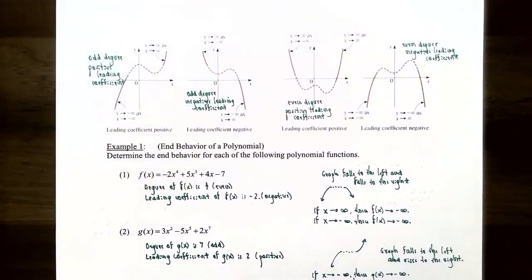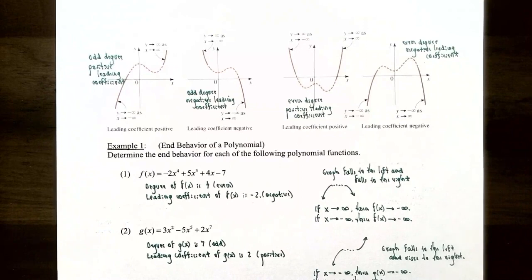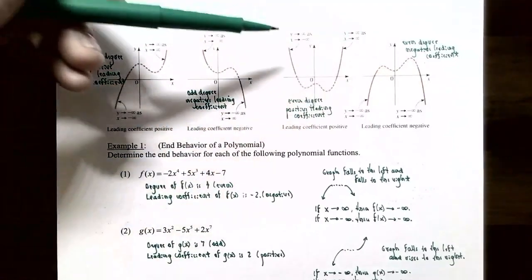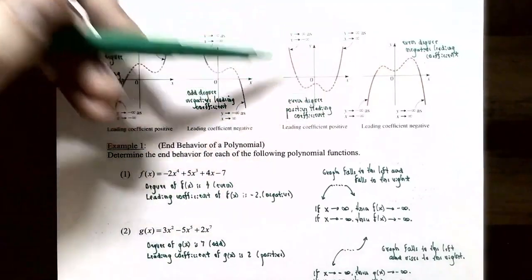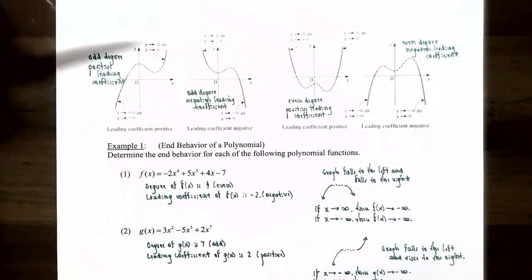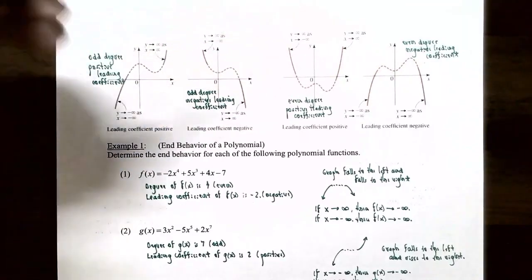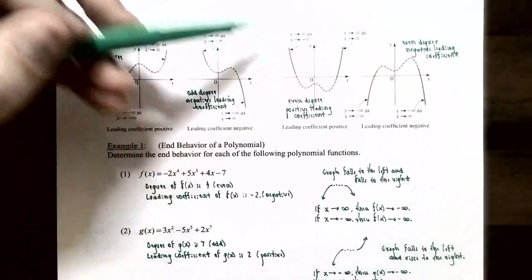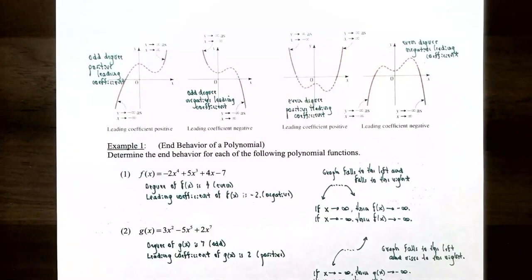Case 3: even degree with a positive leading coefficient. The graph rises on both the far left and the far right. As x approaches negative infinity, y approaches positive infinity, and as x approaches positive infinity, y also approaches positive infinity. For even degree polynomial functions, the ends of the graph have the same behavior — both going up in this case.